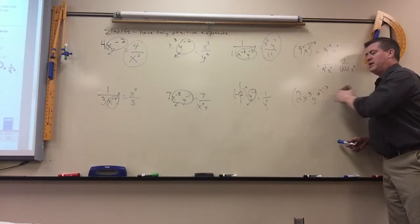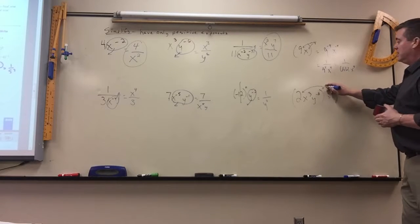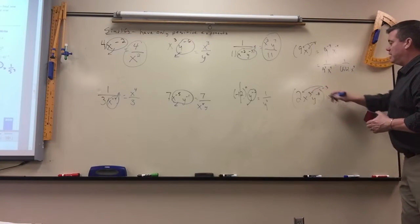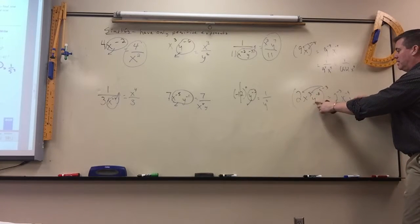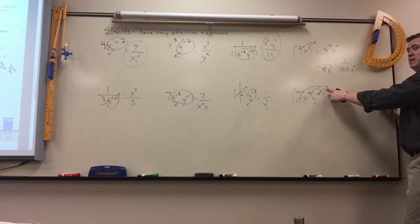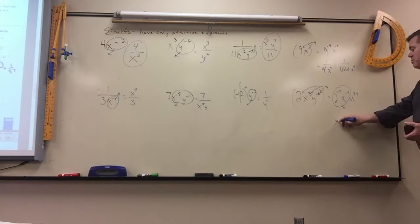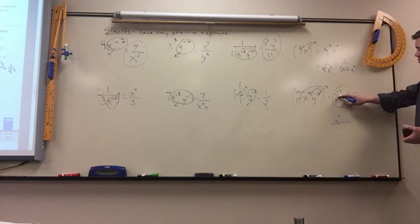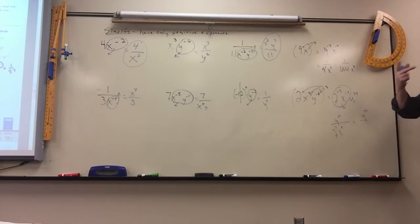This one, everything is raised to the negative 3rd. So it would be 2 to the negative 3rd, x cubed to the negative 3rd. When you have a power to a power, you multiply — so that would be negative 9, and this one would be positive 24. These two would have to go underneath, while y to the 24th would stay on top. That changes underneath to 2 to the positive 3rd, x to the positive 9th. 2 to the 3rd is 2 times 2 times 2, which is 8, so the answer is 8x to the 9th.